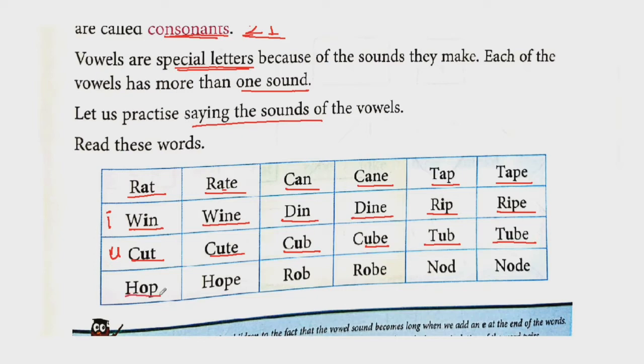Next one. Hop, H-O-P. Which vowel is here? O. Then hope H-O-P-E, also has O. Rob R-O-B, and robe R-O-B-E. Next nod N-O-D, and node N-O-D-E. In this table, all the words given, each word has a different sound. That's why it was said above that vowels are special letters because of the sound they make, and each of the vowels has more than one sound.